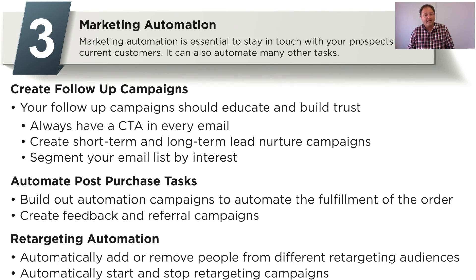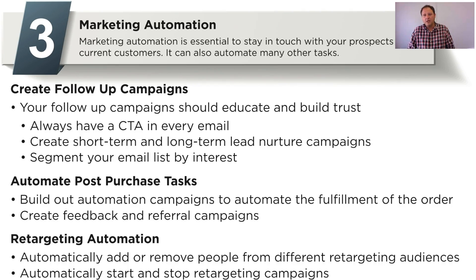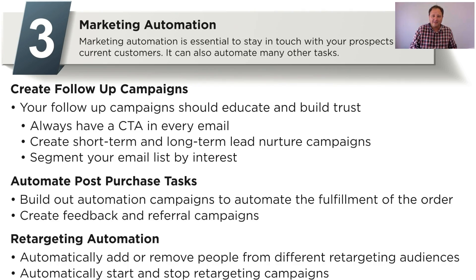Automate your post-purchase tasks — this is super important and can help you save a ton of time. Most of these tasks are routine: every time a product is purchased, there are certain things you have to do, and you can put automation campaigns in place to automate the fulfillment of the order. Create feedback and referral campaigns. A lot of businesses say much of their business comes from referrals, but when asked what referral campaigns they're using, they say they don't have any — they just get referrals. Putting automated referral campaigns in place will definitely increase the number of referrals you get, because this goes out with every single order and you get feedback and reviews of your products and service.